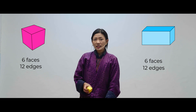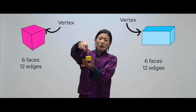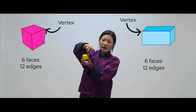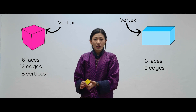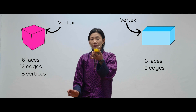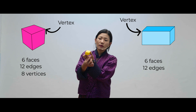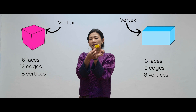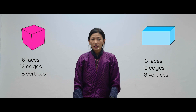Let's count the number of vertices on the cube: 1, 2, 3, 4, 5, 6, 7, 8. A cube has 8 vertices. Let's count for the rectangular prism: 1, 2, 3, 4, 5, 6, 7, 8. A rectangular prism also has 8 vertices.